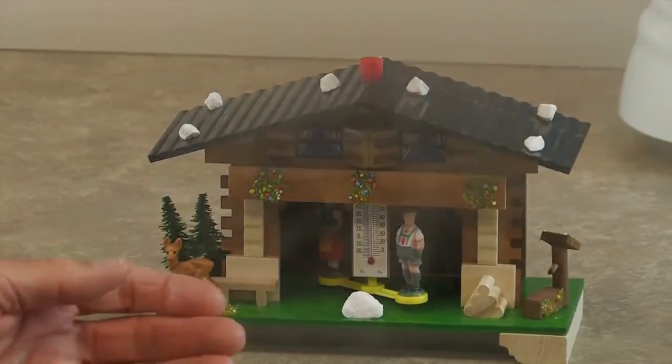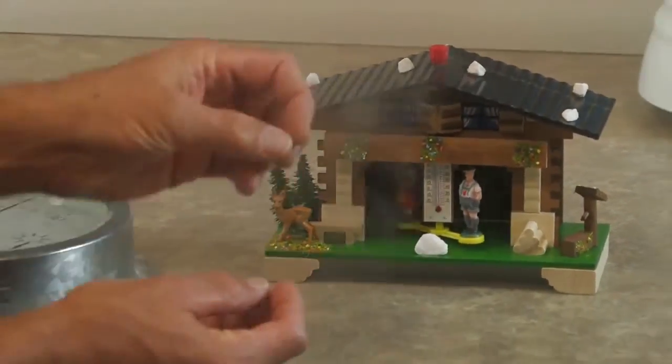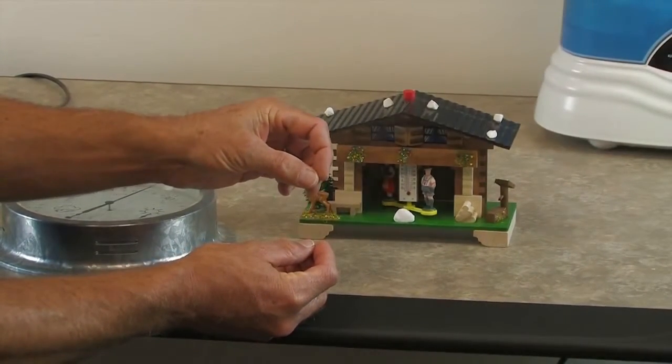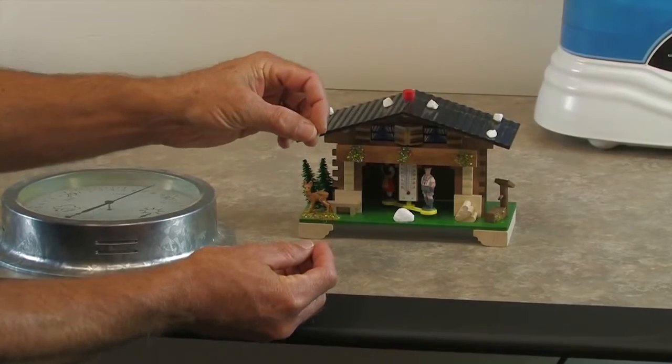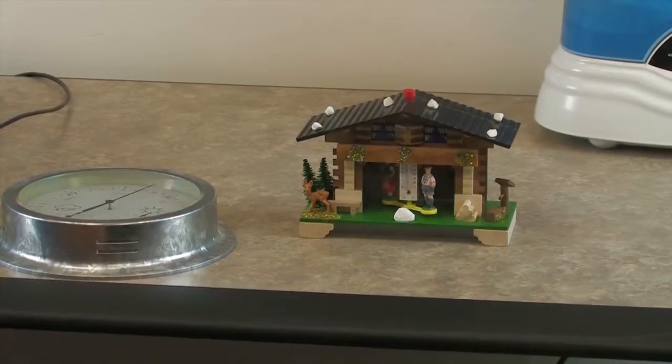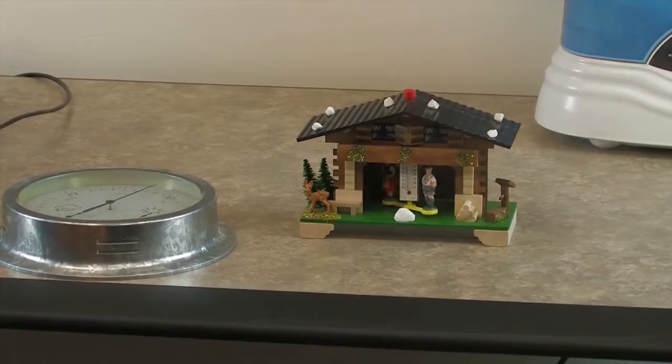The way an antique weather house works is they actually used a human hair, and so as the humidity soaked into the hair, the hair would actually stretch, allowing the male to come out of the house, and on a dry day it would contract, allowing the female to come out of the house.